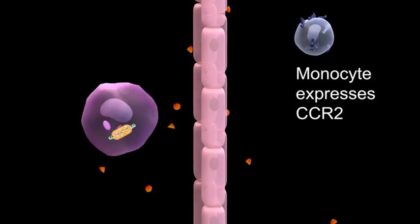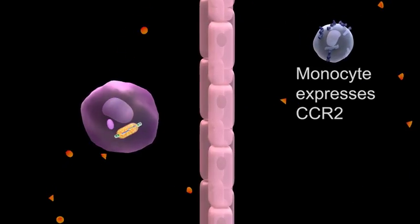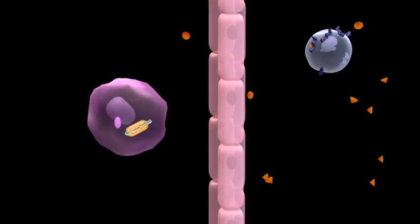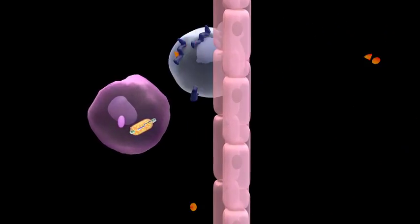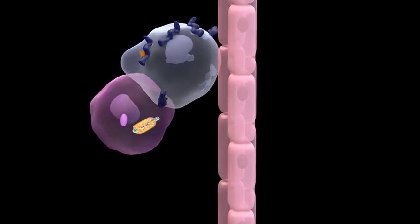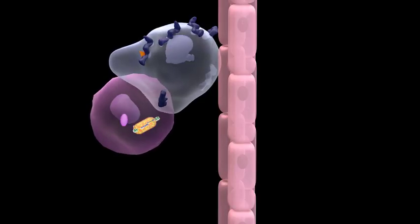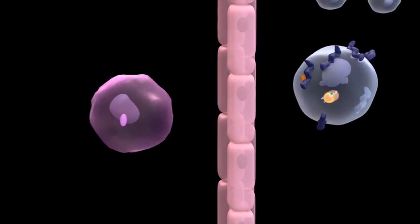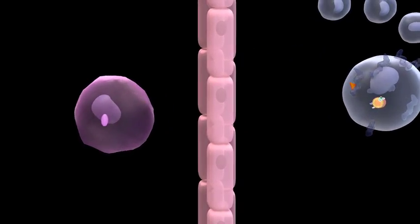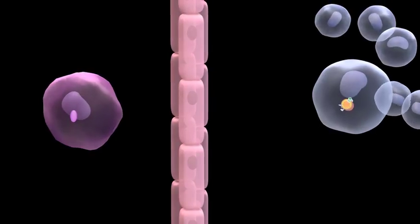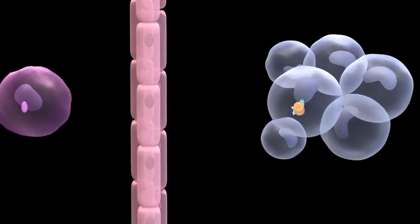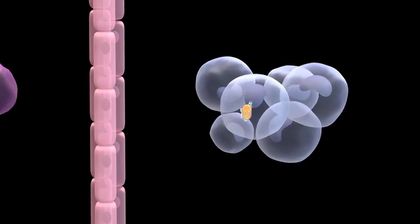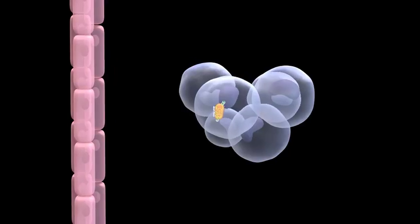Monocytes expressing the CCL2 receptor, CCR2, come to the infected alveolar macrophage. A monocyte then fuses to the alveolar macrophage, allowing the bacteria to transfer over to the monocyte. The newly infected monocyte crosses the lung epithelium into the interstitium. It is essentially a taxi cab for the bacteria. The monocyte is less microbicidal than the alveolar macrophage so that the bacteria can survive and grow in it.